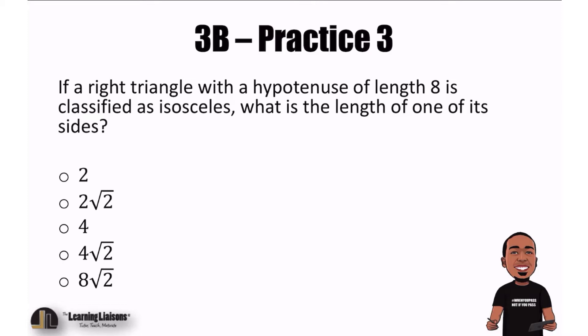If a right triangle with a hypotenuse of length 8 is classified as isosceles, what is the length of one of its sides? Alright guys, we have to be very careful here because we need to use the information that's given to get to a right answer. Let's go ahead and see what we can do.